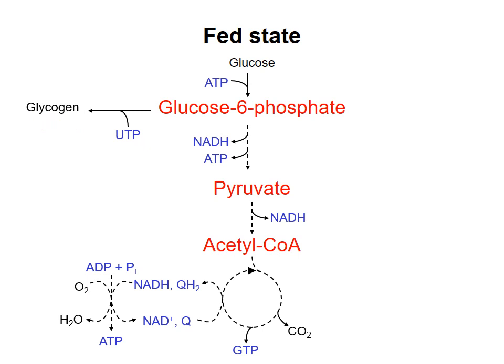Insulin will promote both storage of glucose and oxidation of glucose, and this is not a contradiction. As an analogy, an employed person receiving a regular paycheck will spend some of the money they earn on immediate needs like food, rent, and clothing — that is like oxidizing glucose to make ATP. But hopefully the person is able to save some of their paycheck for future needs — that is like storing glucose as glycogen. For the same reason, some of the acetyl-CoA made from pyruvate will not enter the citric acid cycle, but will be used to make fatty acids for storage as triacylglycerol. This is another form of storing energy for future needs.